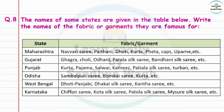Punjab is famous for kurta, pajama, salwar, kameez, Patiala silk sari, and turban. Odisha is famous for ikat, Sambalpuri sari, Bomkai sari, and kurta, etc. West Bengal is famous for dhoti, Punjabi, Dhakai silk sari, Kantha sari, etc.